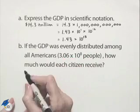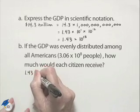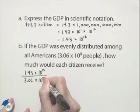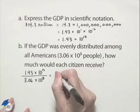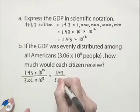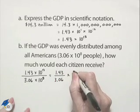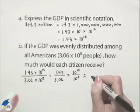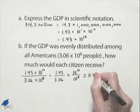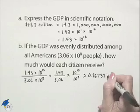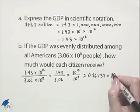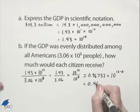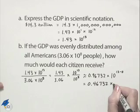We'll take the total, which is 1.43 times 10 to the 13th, and divide that by 3.06 times 10 to the 8th. We can separate this into two fractions: 1.43 divided by 3.06 multiplied times 10 to the 13th divided by 10 to the 8th. Using a calculator, we come up with a value which is approximately 0.46732 for the first fraction. We're going to multiply that times 10 to the 13th minus 8th power. So that's going to be 0.46732 multiplied times 10 to the 5th.